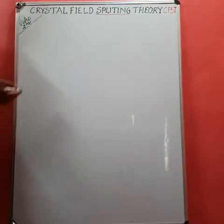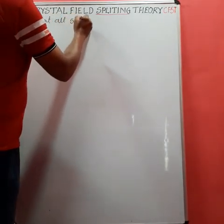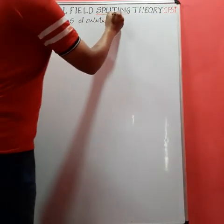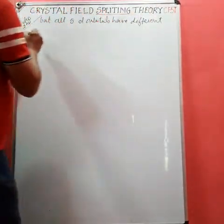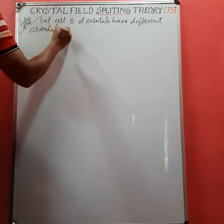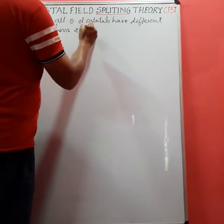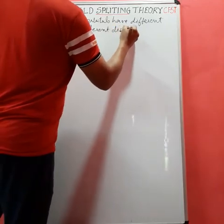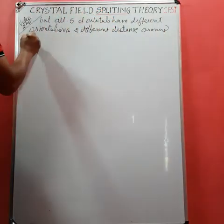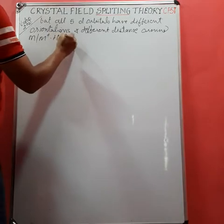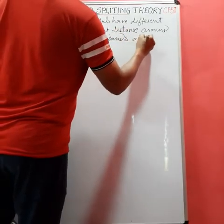This is a continuation of the first video. All five d orbitals have different orientations and different distances around the metal or metal cation. Hence, when ligands approach the metal center, they experience different repulsion forces.